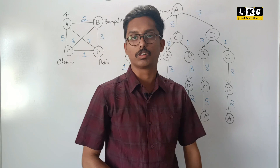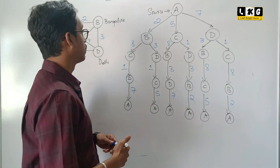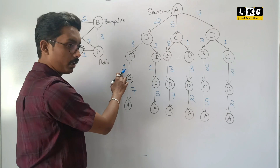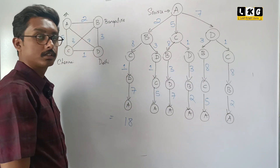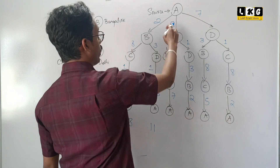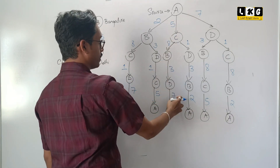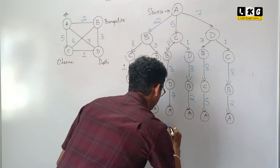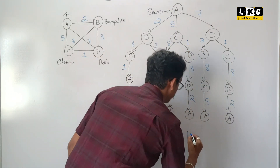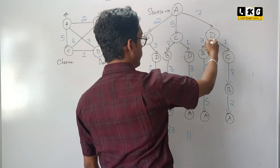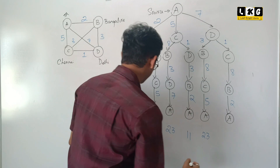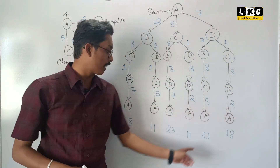Now we need to add all the costs. What is 2 plus 8 plus 1 plus 7? 2 plus 8 is 10, 10 plus 1 is 11, 11 plus 7 — the cost comes to 18. Next: 2 plus 3 is 5, 5 plus 1 is 6, 6 plus 5 — the cost is 11. Then 5 plus 8 plus 3 plus 7: 7 plus 3 is 10, 10 plus 8 is 18, 18 plus 5 is 23. Then 5 plus 1 is 6, 6 plus 3 is 9, 9 plus 2 — again this comes to 11. Then 7 plus 3 is 10, 10 plus 8 is 18, 18 plus 5 — again this cost is 23. Finally 7 plus 1 is 8, 8 plus 8 is 16, 16 plus 2 is 18. These are the costs that we got.